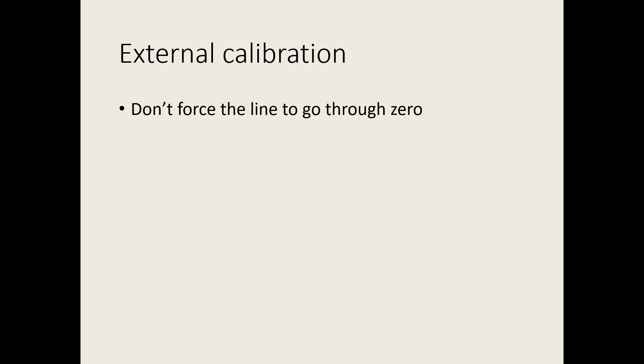The line should only fit the points you have measured, so you shouldn't force the regression line to go through zero. Most analytical techniques have a level of background response even when the concentration is zero. If you force the line through the origin, you'll get a distorted value of the slope and therefore an inaccurate value for the concentration.